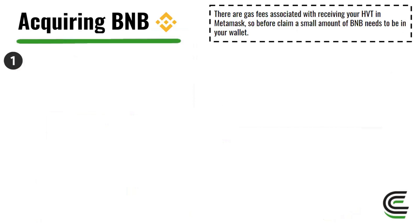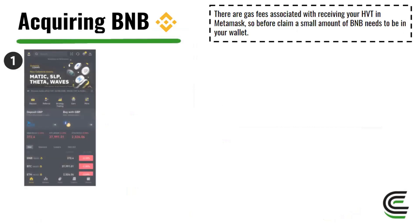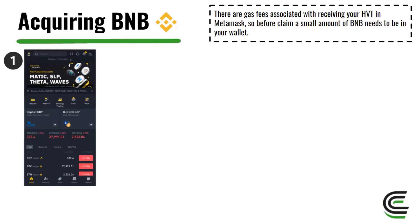Once your HVT has arrived in your HVT smart contract, you first need to acquire BNB in order to claim your HVT. The reason is that there are gas fees associated with receiving your HVT, so you'll want a small amount of BNB in your MetaMask wallet. To do that, go to Binance. If you don't have a Binance account, there's a previous video showing you how to set up and verify Binance — see the description below for the link.